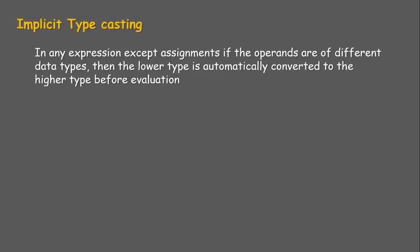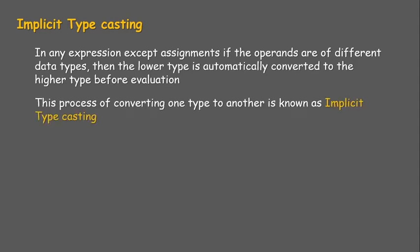Implicit typecasting: in any expression, except assignments, if the operands are of different data types, then the lower type is automatically converted to the higher type before evaluation. This process of converting one type to another is known as implicit typecasting. The compiler automatically converts all operands to a common higher type.